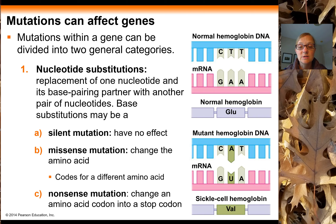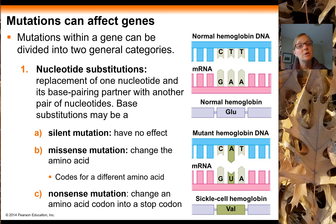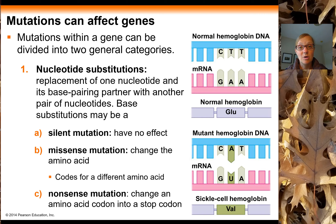The third result from nucleotide substitution is a nonsense mutation. This is where you change a codon that codes for an amino acid into a stop codon. What happens is the polypeptide gets prematurely truncated — the ribosome was supposed to add an amino acid, but instead encounters the stop codon, and that stops production of the rest of the polypeptide.